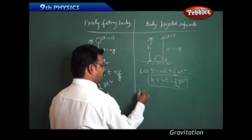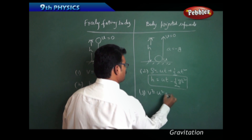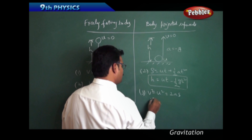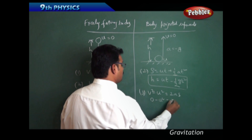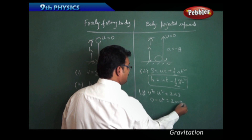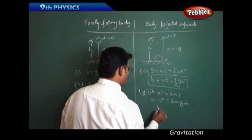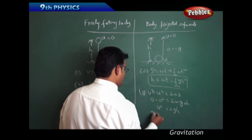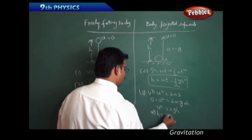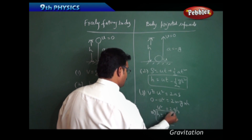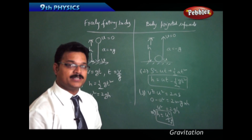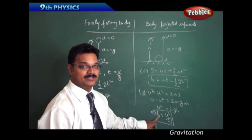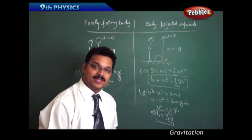For the third equation V² - U² = 2AS, the final velocity V = 0. With A = -G and S = H, we get -U² = 2(-G)H, so the negatives cancel and U² = 2GH, which gives H = U²/2G. This is another important formula for a body projected upwards — you can find the maximum height reached if you know the initial velocity.